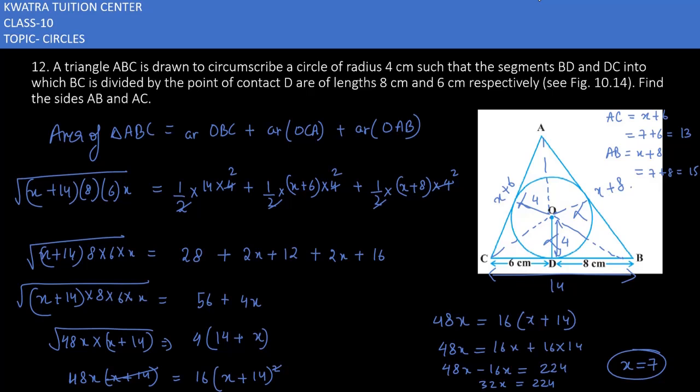So the answer for question 12 is AC = 13 cm and AB = 15 cm. The process requires using triangle ABC first, then dividing it into three equal sub-triangles using the incenter O, so that areas on both sides are equal and you can solve for x. Now moving to the next one, which is question 13.